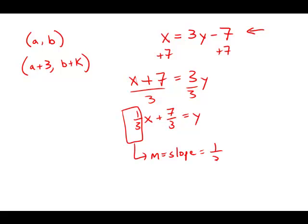If you have a slope of 1/3, what that means is we have a rise of 1 and a run of 3. Now we look at our points. When we change from A to A+3, that is a run of 3 — we've increased X by 3. And if X increases by 3, Y should increase by 1. So K must equal 1. This is answer choice D.